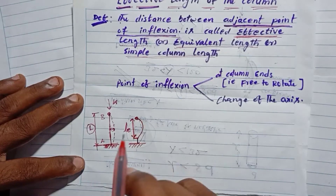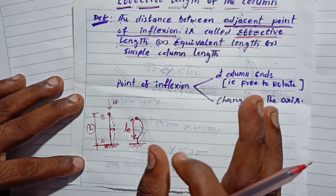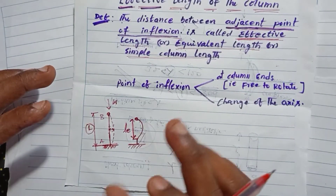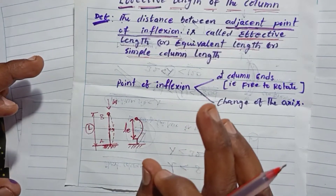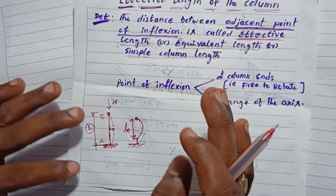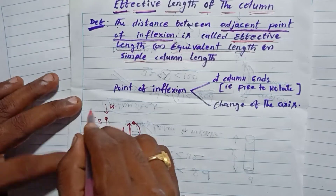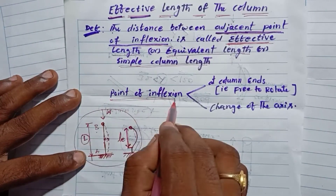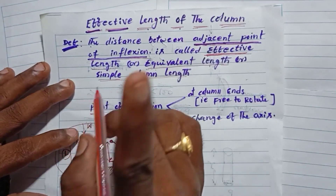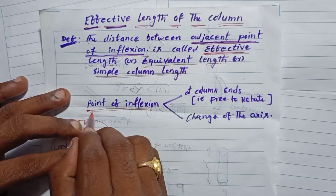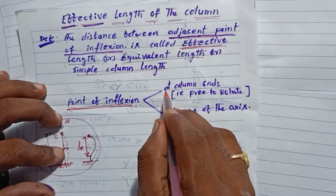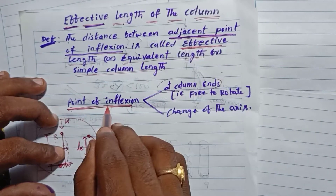So we can call this the effective length — the length of the column which is subjected to failure. We can identify this as the region between the points of inflection. This is the definition of inflection points.